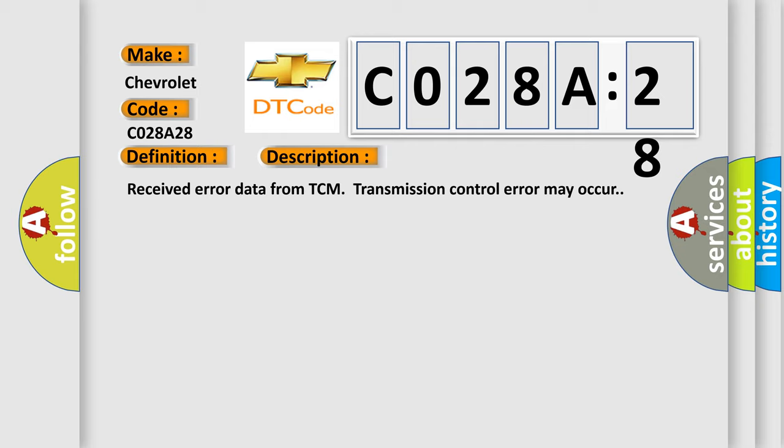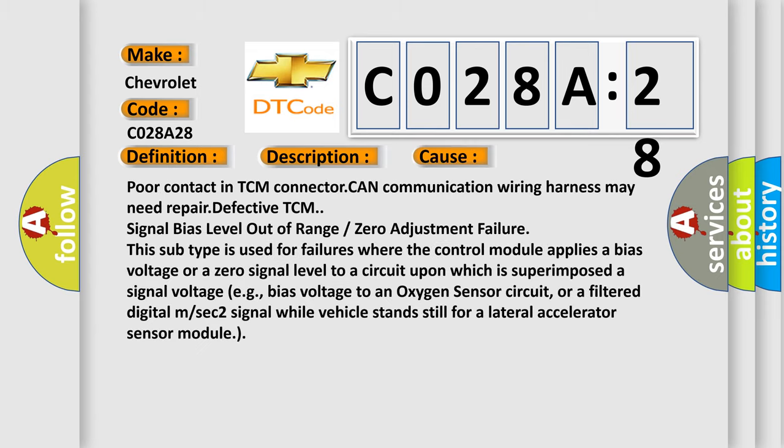Received error data from TCM transmission control. This error may occur. This diagnostic error occurs most often in these cases: poor contact in TCM connector, CAN communication wiring harness may need repair, defective TCM, signal bias level out of range or zero adjustment failure.